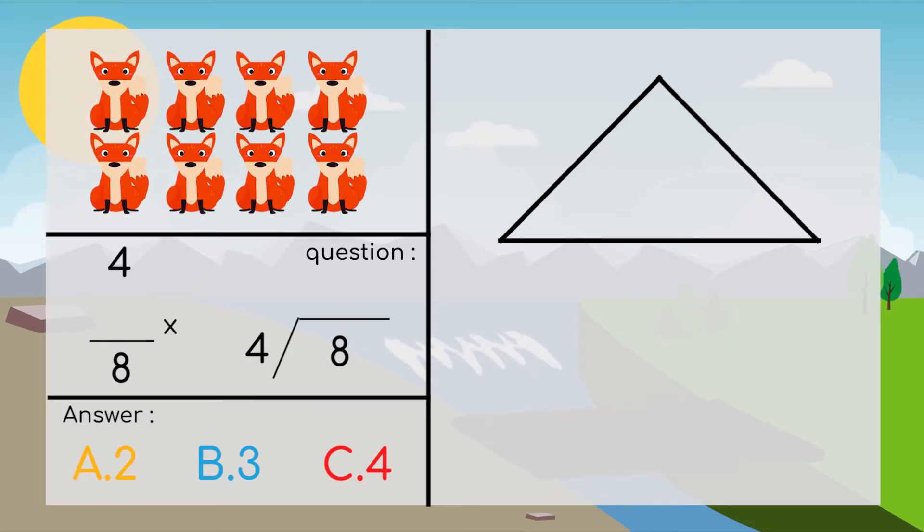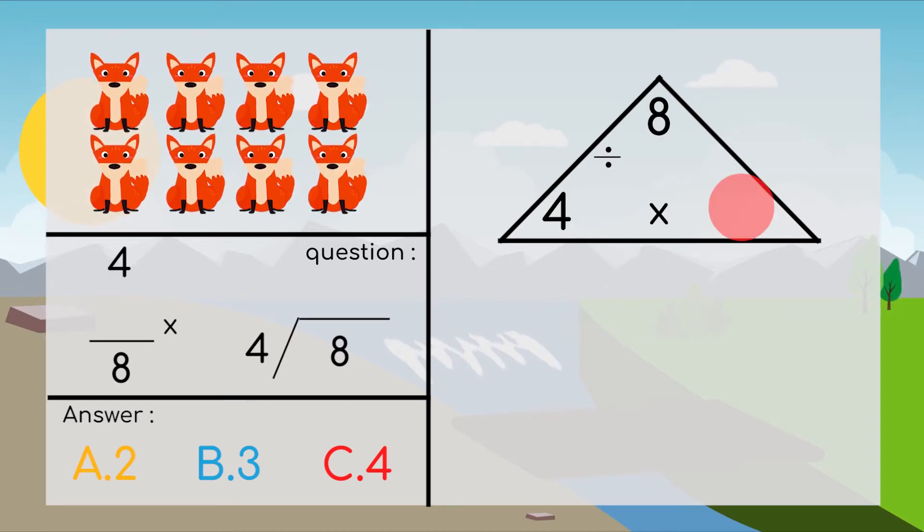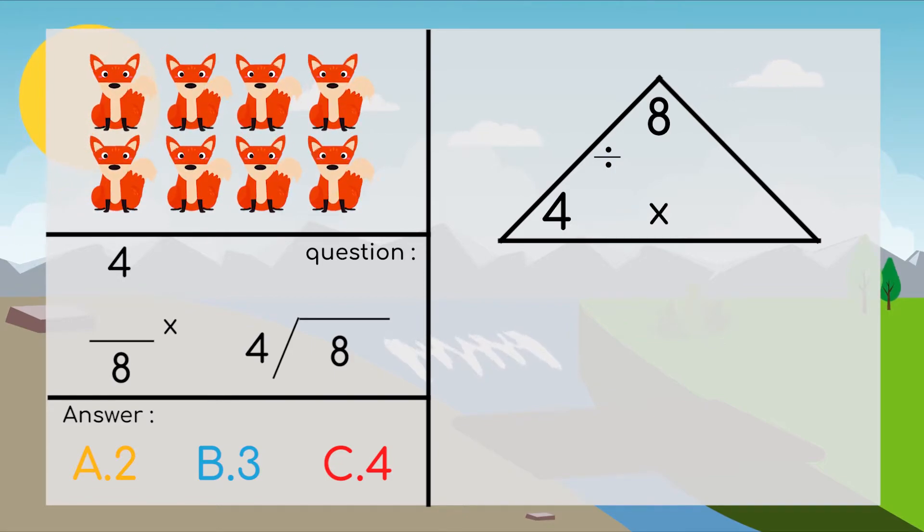First here we have 8 and then 4. So 4 times blank equals 8, and 8 divided by blank equals 4. Now let's try to find that number.